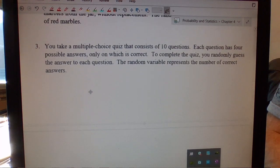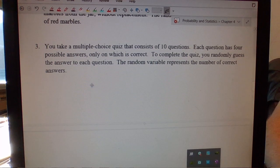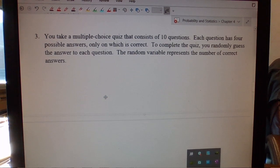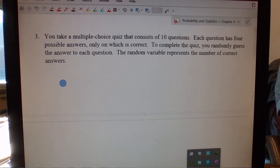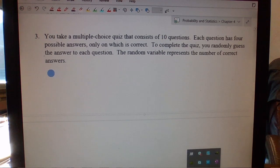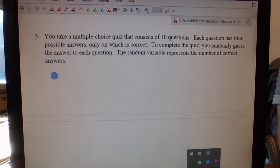We'll read the next one. It says you take a multiple choice quiz that consists of 10 questions. Each question has four possible answers, only one is correct. But it says to complete the quiz, you randomly guess the answers to each question. The random variable represents the number of correct answers. So the question is, is this a binomial distribution or not?